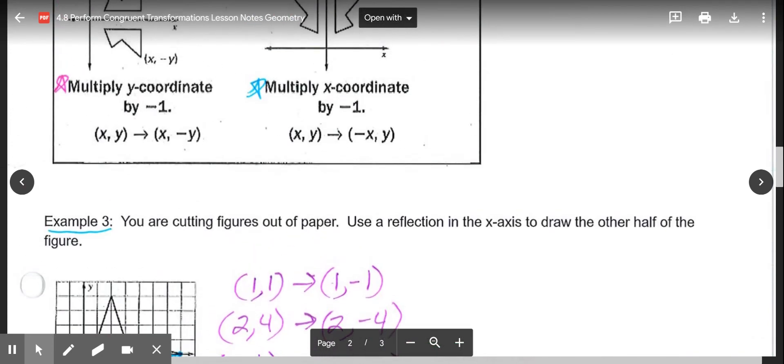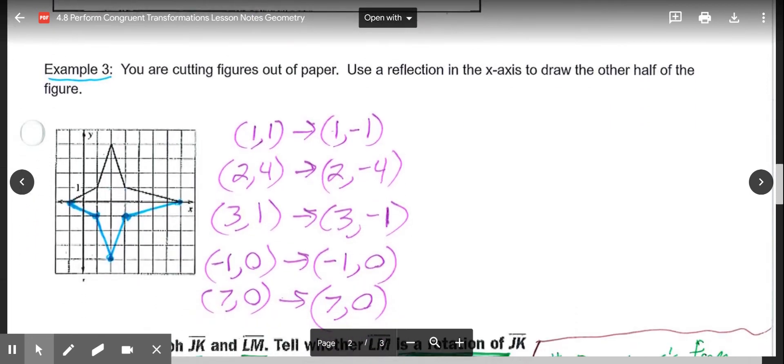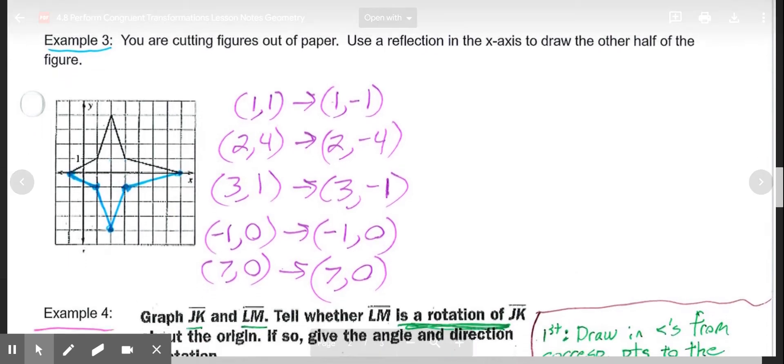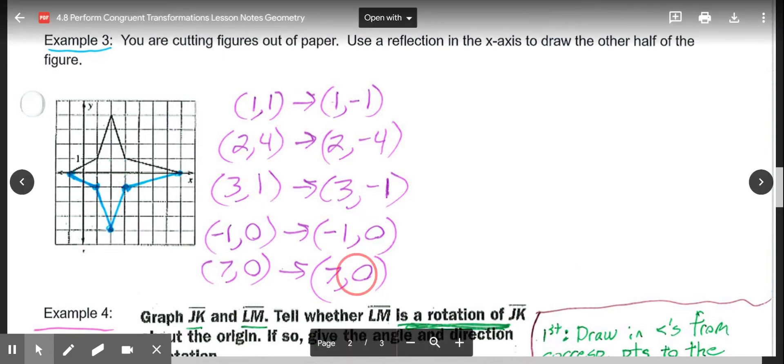So if we're reflecting over the x-axis, the rule tells us to multiply the y coordinate by negative 1. So (1, 1) would become (1, -1), (2, 4) would become (2, -4), (3, 1) becomes (3, -1), (-1, 0) stays the same because 0 is neither positive nor negative, so it's still 0. Same with (7, 0), that would stay the same point. So then you plot your new points and connect them to draw the reflection side of this original figure.